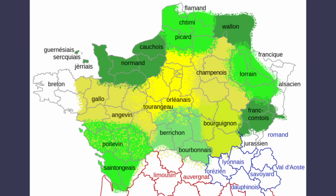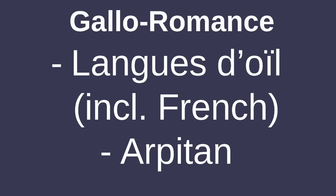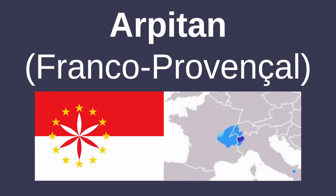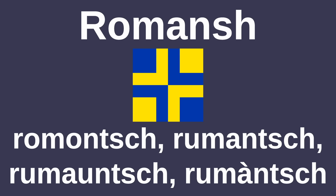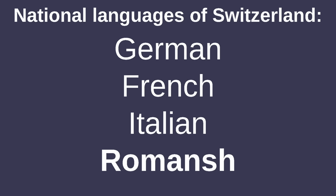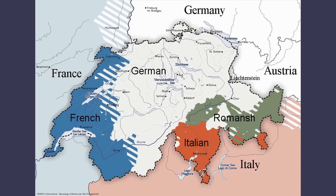The other Langues d'oïl of northern France include Picard, Walloon, Lorrain, Norman, Gallo, Poitevin, and many others. These are all part of the Gallo-Romance branch, of which Arpitan is also a member, and is spoken in the Aosta Valley region of Italy and across the border in France and Switzerland. Speaking of Switzerland, that's where Romansh is spoken, the next language to be talked about. It's recognized as one of the four national languages of Switzerland, spoken in parts of the Swiss canton of Grisons, and is considered to be part of the Rhaeto-Romance branch alongside Ladin and Friulian, which are spoken primarily in Italy.